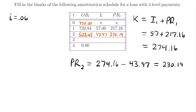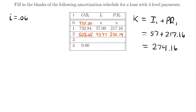From this point forward the process just repeats. You find the interest by multiplying the interest rate by the outstanding balance. Multiplying 0.06 by $502.65 gives accumulated interest of $30.16. Then subtracting this interest from the payment: $274.16 minus $30.16 equals $244.00 as the principal. Subtracting that principal from the outstanding balance at time two: $502.65 minus $244.00 gives the outstanding balance at time equals three: $258.65.